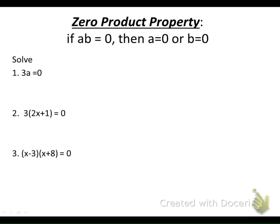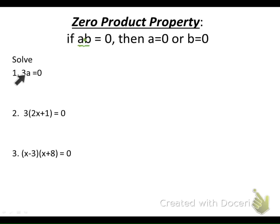Let's start by talking about the zero product property. The zero product property is the idea that if I have two values that multiply to give me a product of zero, then either the first value is zero or the second value is zero. If I multiply these and get zero, there's no way to get a product of zero unless one of the two numbers we multiplied was zero itself. So if we come down to this first example and it says three times a is zero, the only number a could be is zero. The three is not zero, therefore a must be zero.